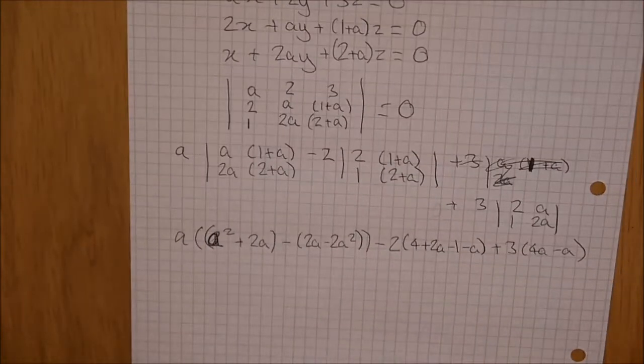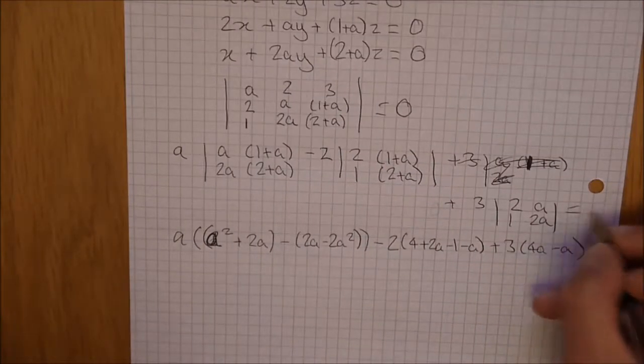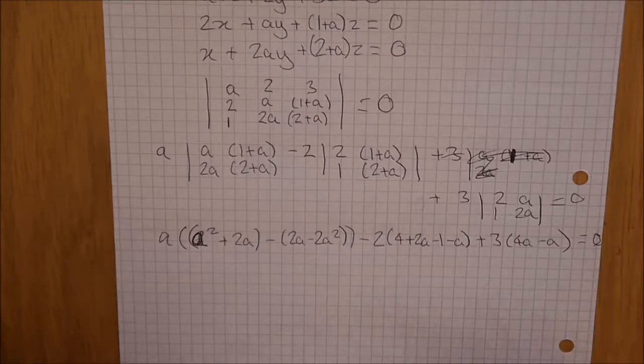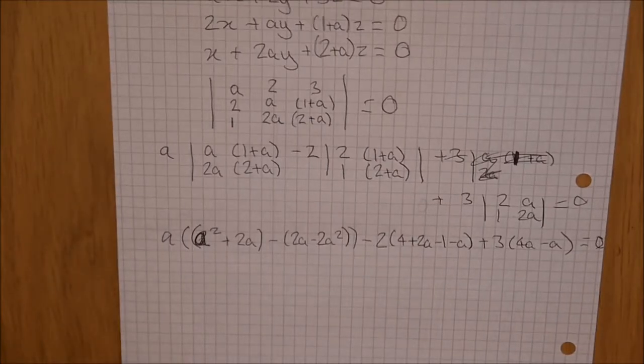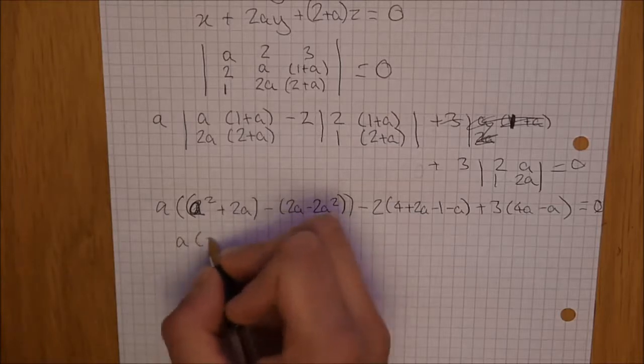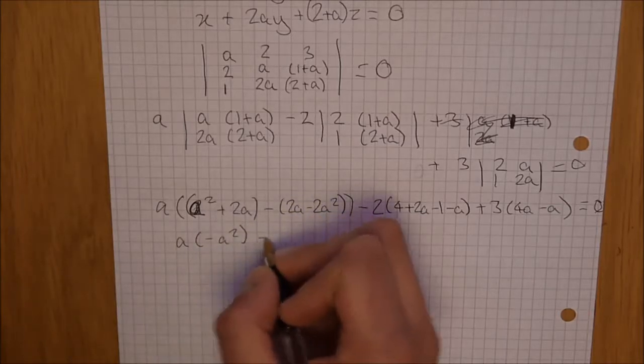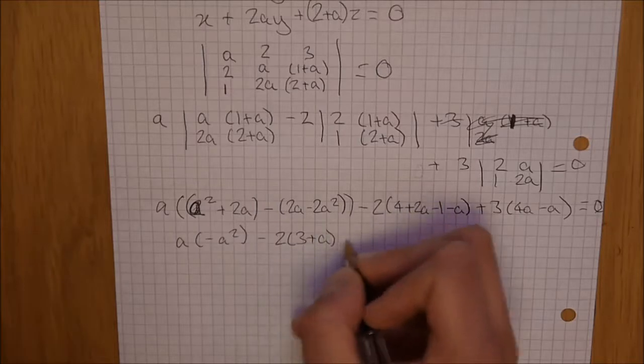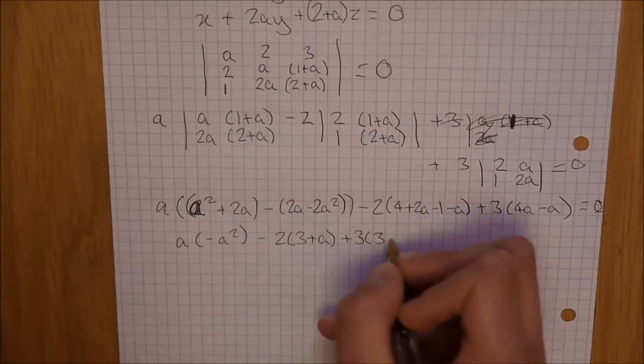Then we can simplify this even further, making sure that you equal it to zero every single time. That's always important. And keep going. Then we'll have a lots of minus a squared minus 2 lots of 3 plus a plus 3 lots of 3a.